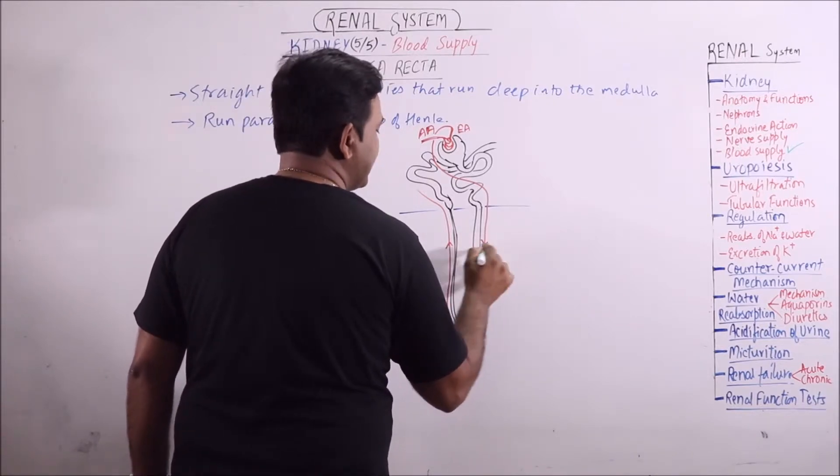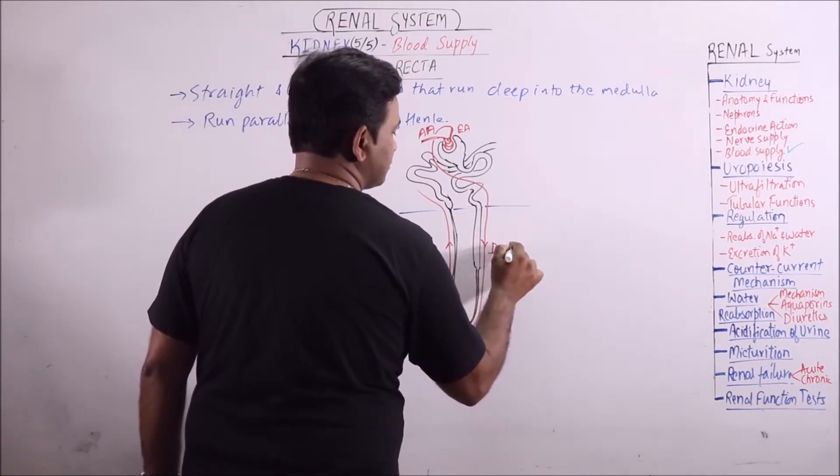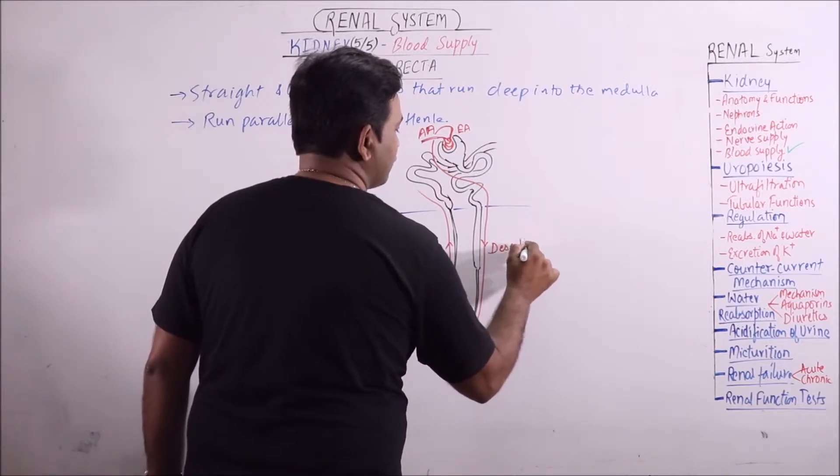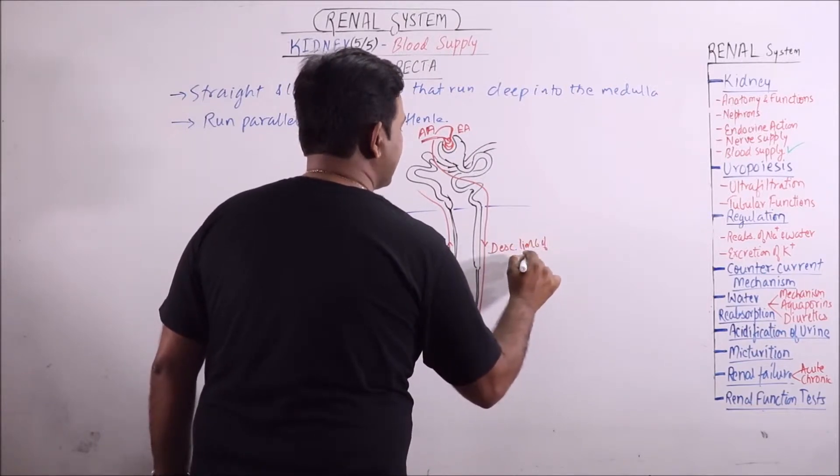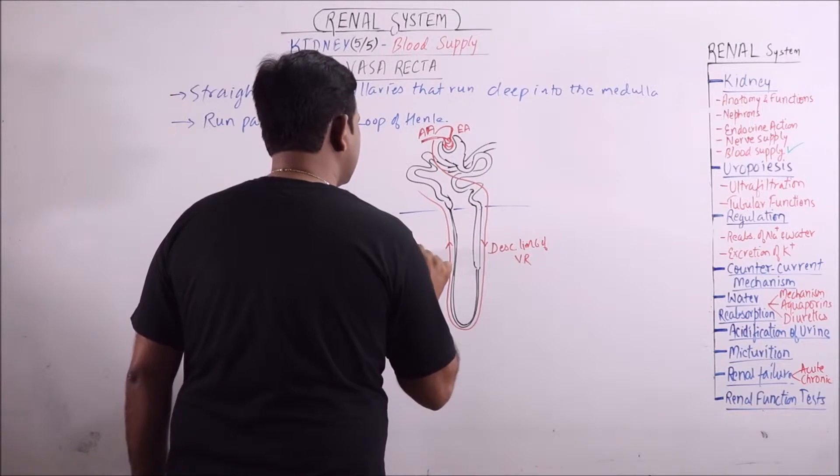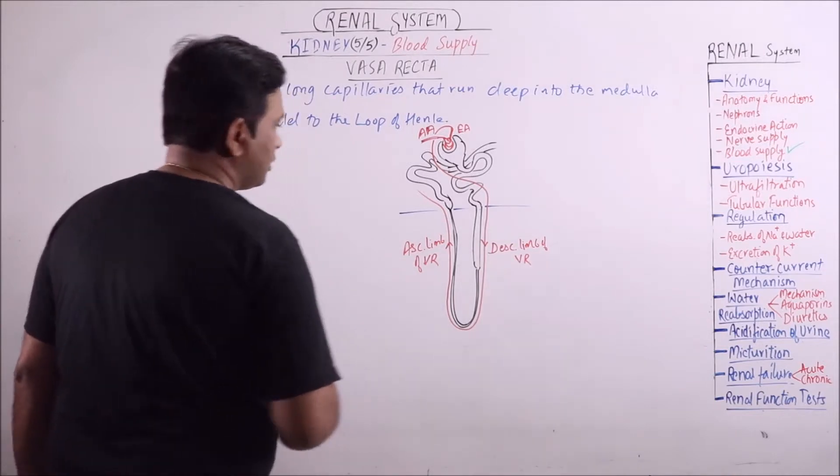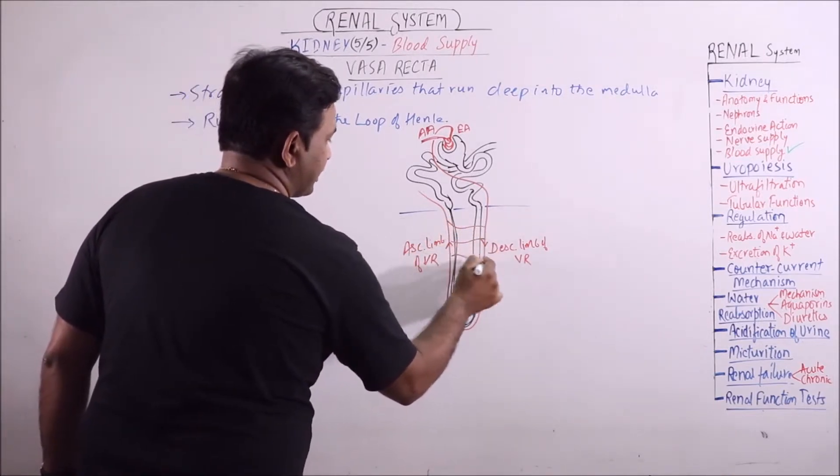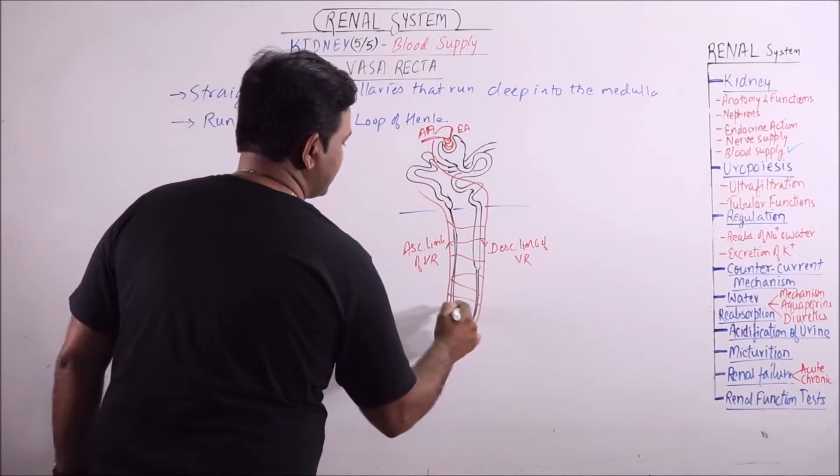This is the descending limb of Vasarecta and this is the ascending limb of Vasarecta. It is also interconnected by the capillaries.